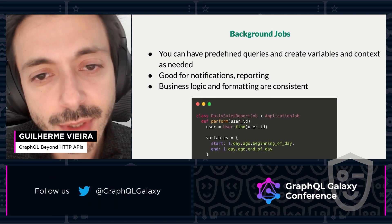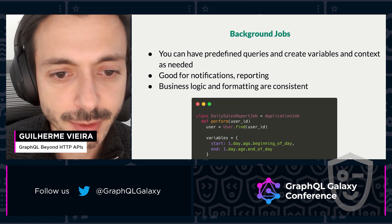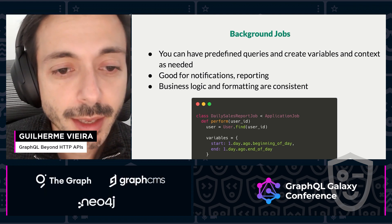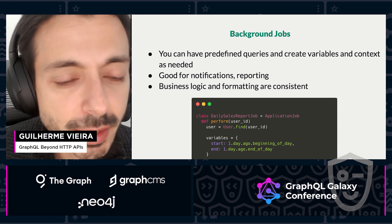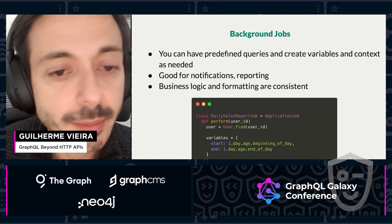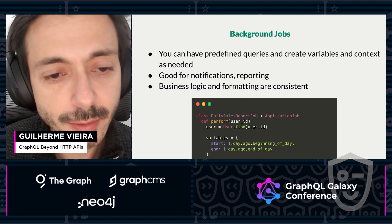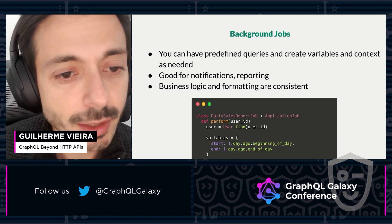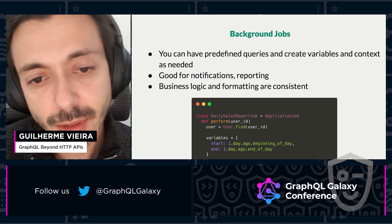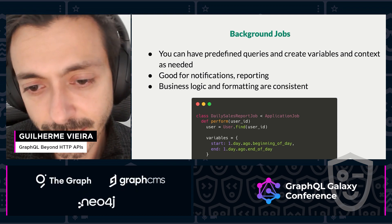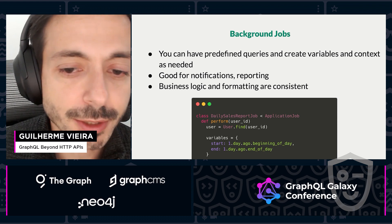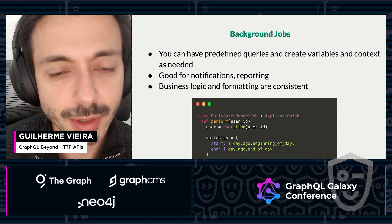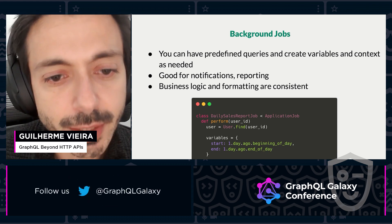Another very good use case for GraphQL is in background jobs. We use background jobs for recurring tasks — for example, reporting — or sometimes for something that can be run asynchronously, like sending an email notification. We need to get some data for running those background jobs, and we can use GraphQL to get this data. It's very good because you get the data using the same business logic and formatting that you have for your HTTP API, so it's very easy to handle the data in a way that's useful for you.